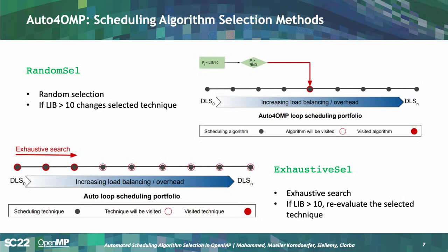Let's take a deeper look at the three selection methods. Random selection, as the name suggests, randomly selects a scheduling algorithm — but only does so when the load imbalance value of the executing loop divided by 10 is greater than a random value. This avoids changing the algorithm every time the loop runs. When the threshold is exceeded, a random number between zero and N is calculated and the corresponding algorithm is selected.